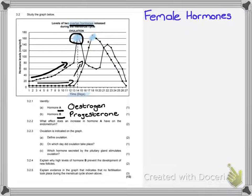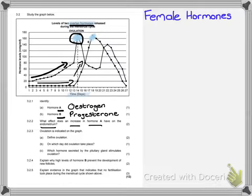Question 3.2.2 asks: what effect does an increase in hormone A have on the endometrium? This is a straightforward answer — you have to know your hormone functions. Estrogen is used to regrow the endometrium, maintain it, and make it thicker. For two marks: as hormone A increases, the endometrium thickens, and estrogen maintains the lining.